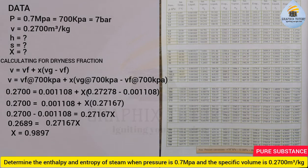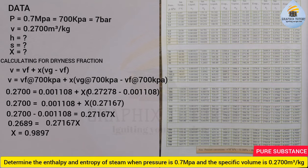The dryness fraction must be between 0 and 1. When the dryness fraction equals 1, it is pure saturated vapor. When it equals 0, it is pure liquid. When it is 0.5, it is an equal mixture of gas and liquid. Our value of 0.9897 means the steam is mostly vapor.